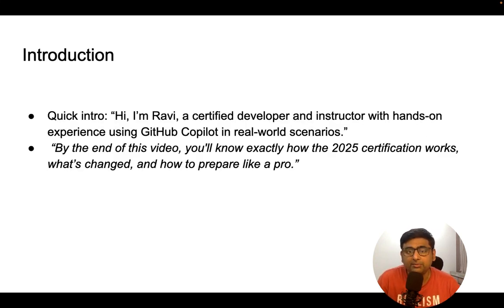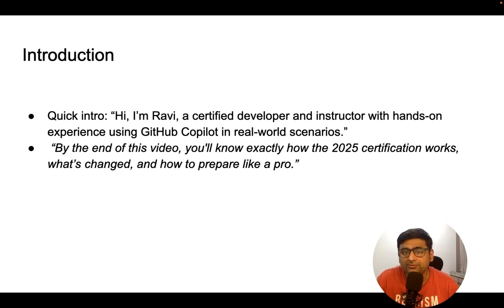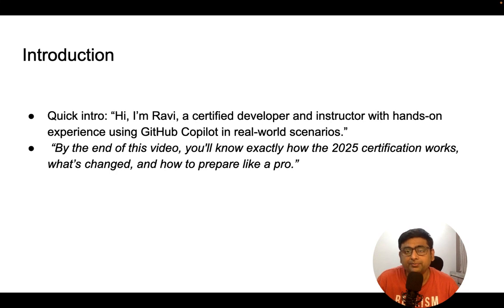Before we start any further, I am going to give a brief intro about myself. My name is Ravi Singh, and in this IT world I have 17-plus years of experience. I have worked on a variety of platforms including front-end, back-end, middleware, and the API part as well. I have also worked extensively with AI tools, and recently I got a chance to work on GitHub Copilot — how to use it, get the certification done, and understand how to improve developer productivity.